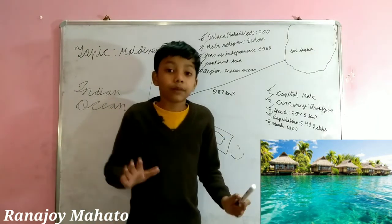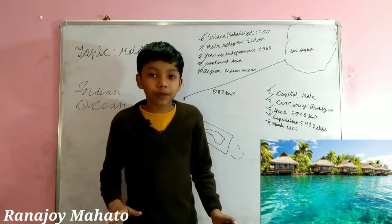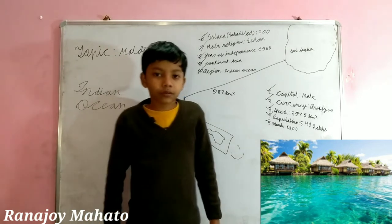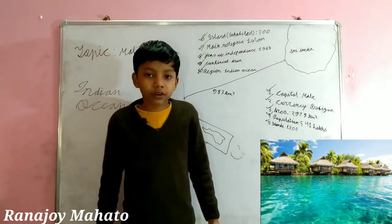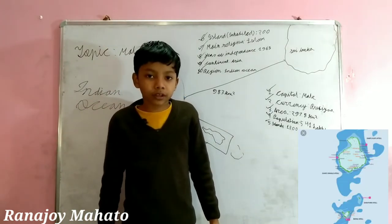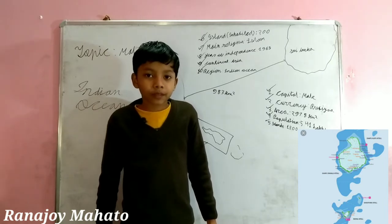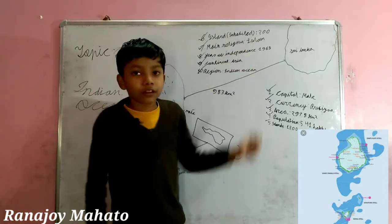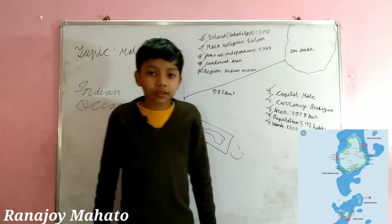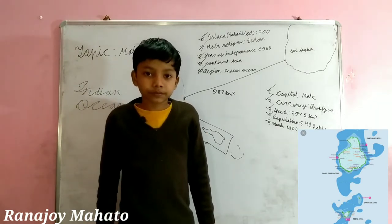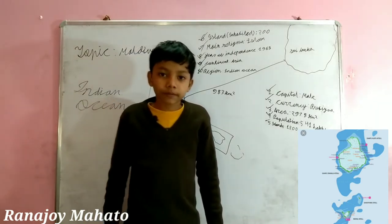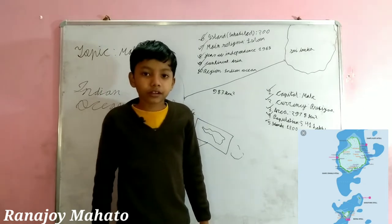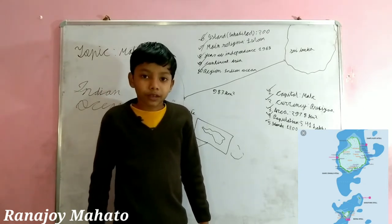The sixth fact is islands — but inhabited ones. How many islands in Maldives are inhabited? Well, there are 200 inhabited islands. While the other 1,000 islands are uninhabited.